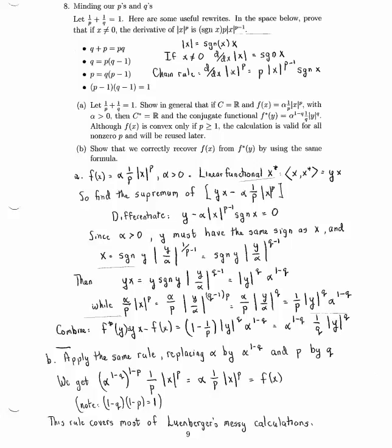Take our formula for f star. And now instead of alpha, we have alpha to the 1 minus q. And we're using q where we used p before. So what's the answer?